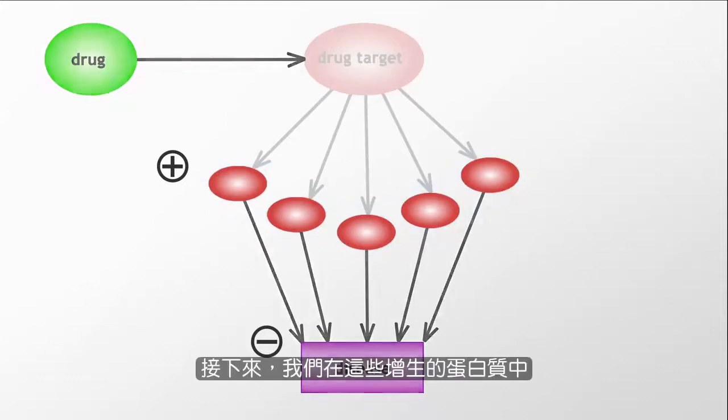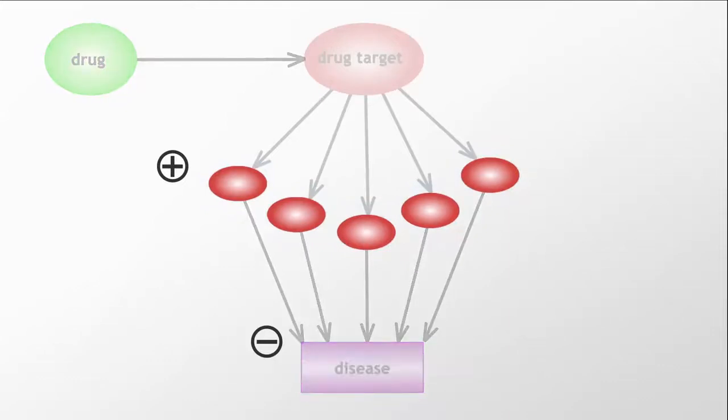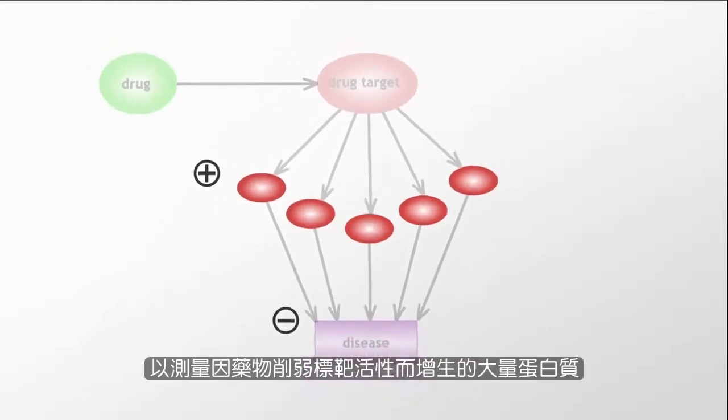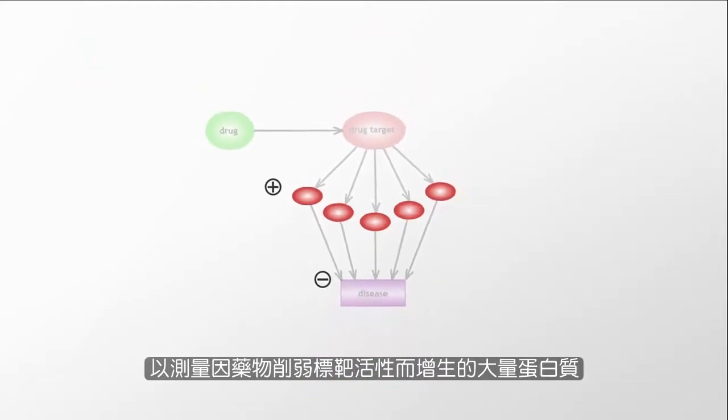Next, we identify which of these increased proteins are also secreted. This allows for simple assay design to measure increased abundance as a result of the drug decreasing the activity of its target.